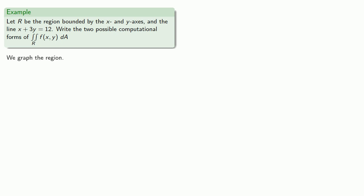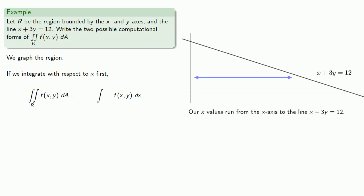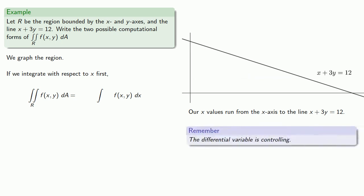So let's graph our region. Now if we integrate with respect to x first, that's letting our x values vary, so we're moving horizontally. Our x values will run from the y-axis to the line x plus 3y equals 12. The important thing to remember is the differential variable is controlling, and since we're integrating with respect to x first, our limits of integration have to be x equals something to x equals something.